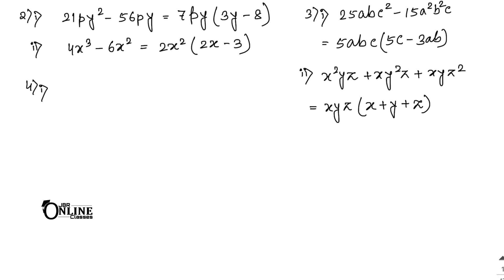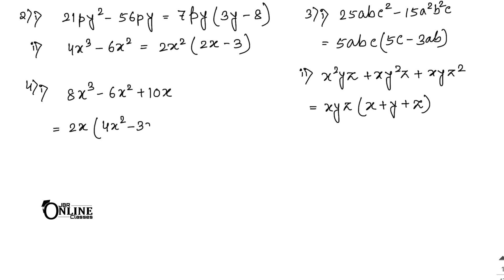Sum number 4.1: 8x³ - 6x² + 10x. The HCF of 8, 6, and 10 is 2, and the smallest power of x is x. So the common factor is 2x. Inside the bracket: 4x² - 3x + 5. The answer is 2x(4x² - 3x + 5). It's very easy!